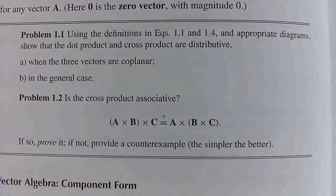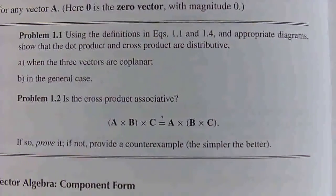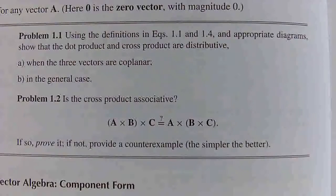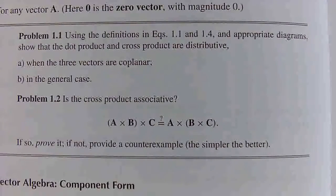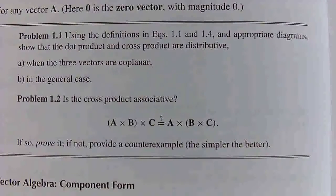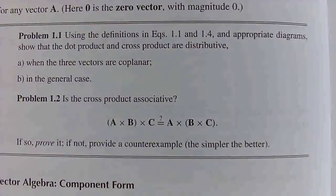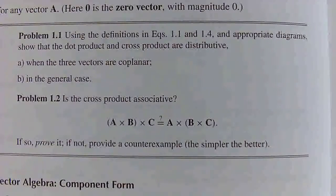Hello everyone, today we're going to be solving problem 1.1 from Griffith's Introduction to Electrodynamics. Using the definitions and equations 1.1 and 1.4, an appropriate diagram shows that the dot product and cross product are distributive.